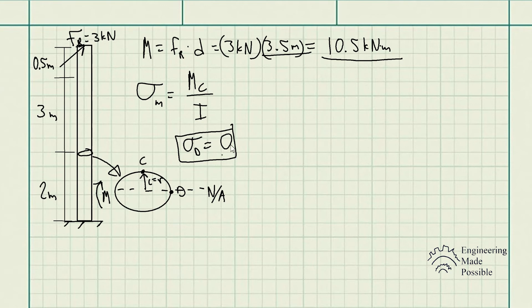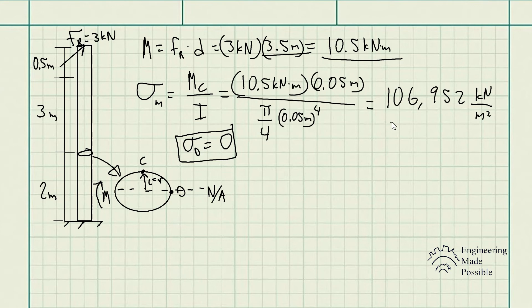Now that we solved the moment, we have C. Then we just plug into the bending stress equation with the moment of inertia and solve accordingly for the stress state at C. This will give us a bending stress, an axial stress, of 106,952 kilopascals, or rounding up 107 megapascals for the stress state at point C. Keep in mind, in this particular case, it's a compressive stress, so it's going to be a negative value.